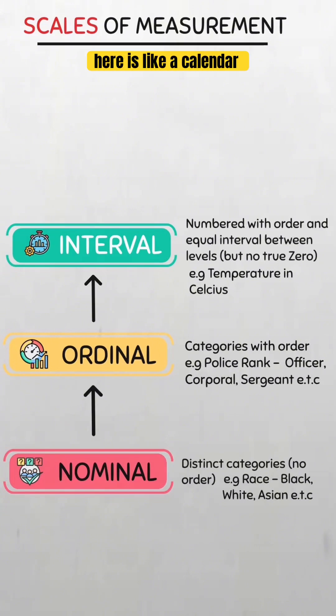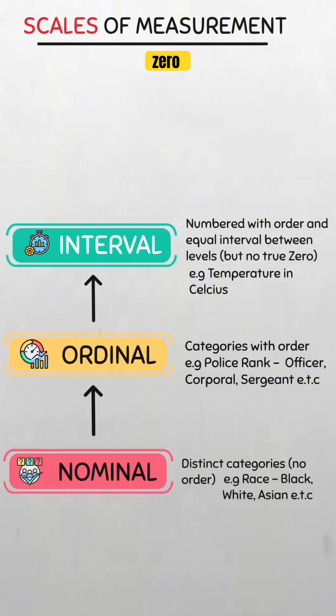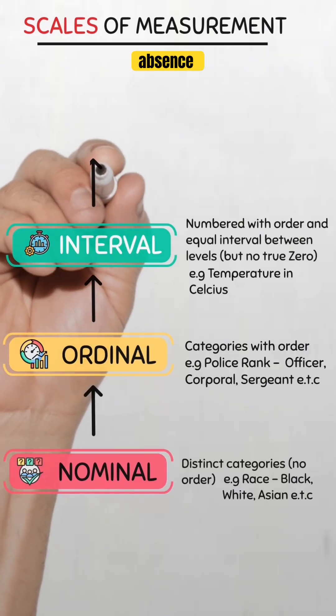Our analogy here is like a calendar — the difference between March and April is consistent, but there is no absolute zero month. So with the interval scale, you can measure the intervals, but not true absence.